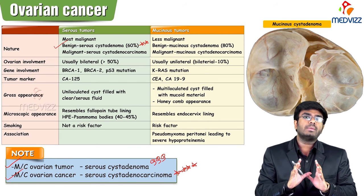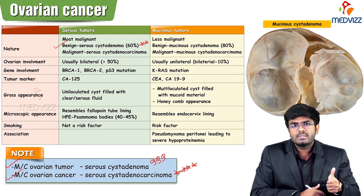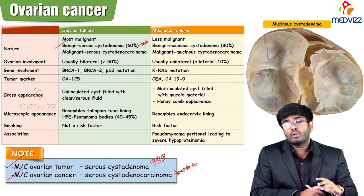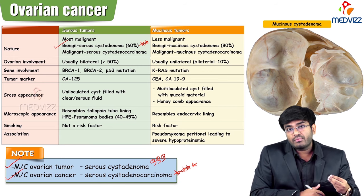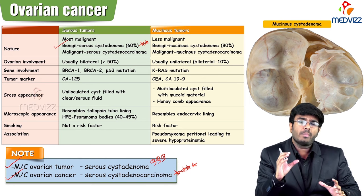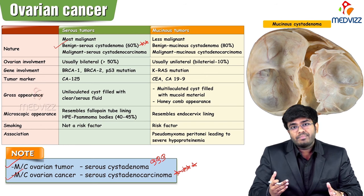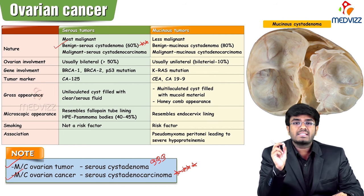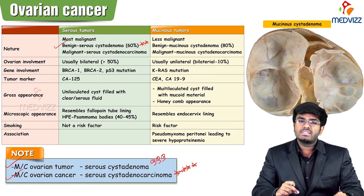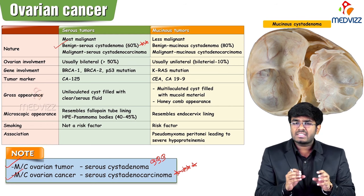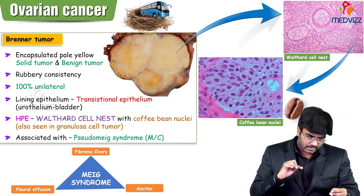Wrap-up: serous tumors — benign: serous cystadenoma; malignant: serous cystadenocarcinoma — associated with BRCA1, BRCA2, and p53 gene mutations, with psammoma bodies on histopathology, and CA-125 as tumor marker. Mucinous tumors are multiloculated with honeycomb appearance, associated with pseudomyxoma peritonei, with the epithelial lining resembling endocervix. Serous tumor epithelial lining resembles fallopian tube.